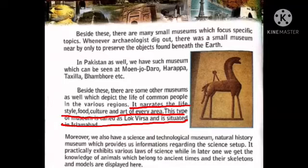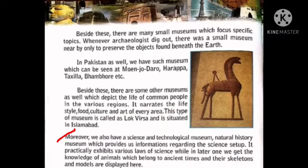Underline the important statements and learn them. Moreover, we also have a Science and Technology Museum and a Natural History Museum. The Science Museum provides information regarding science and practically exhibits various laws of science, while the Natural History Museum gives knowledge of animals from ancient times — their skeletons and models are displayed there.